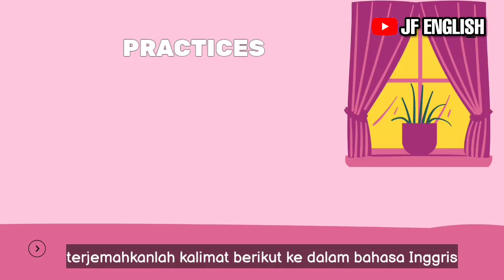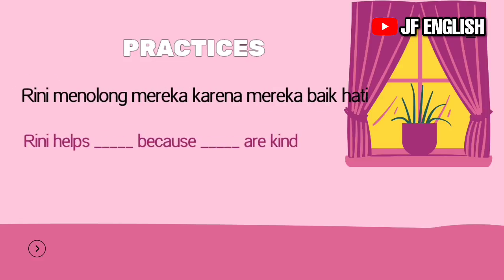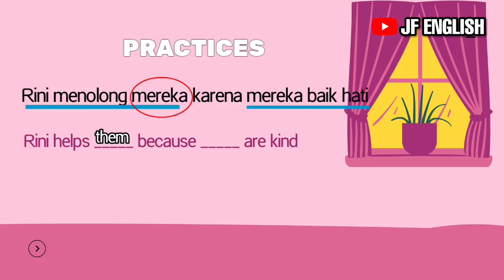It's time to do some little practices now. Kata 'saya' pada kalimat pertama merupakan subjek kalimat, jadi kamu harus menggunakan 'I.' Pada kalimat nomor dua, ada dua kalimat yang digabung: Rini menolong mereka — kata 'mereka' adalah objek (setelah kata kerja 'menolong'); dan mereka baik hati — kata 'mereka' merupakan subjek. Jadi jawabannya adalah 'them' dan 'they.'